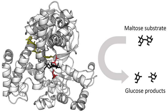The first number broadly classifies the enzyme based on its mechanism. The top-level classification is EC 1, oxidoreductases, which catalyze oxidation/reduction reactions; EC 2, transferases, which transfer a functional group such as a methyl or phosphate group; EC 3, hydrolases, which catalyze the hydrolysis of various bonds; EC 4, lyases, which cleave various bonds by means other than hydrolysis and oxidation; EC 5, isomerases, which catalyze isomerization changes within a single molecule; EC 6, ligases, which join two molecules with covalent bonds. These sections are subdivided by other features such as the substrate, products, and chemical mechanism. An enzyme is fully specified by four numerical designations. For example, hexokinase is a transferase that adds a phosphate group (EC 2.7) to a hexose sugar, a molecule containing an alcohol group.